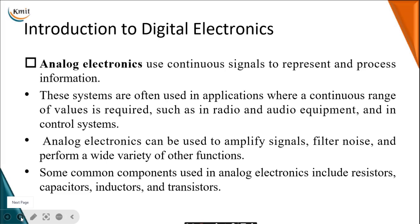Analog electronics uses continuous signals to represent and process information. Whatever input you give to analog devices is in the nature of a continuous signal. After processing by those devices, you get an output which is also in the form of a continuous signal, where the output variation depends on the time signal. These systems are often used in applications where a continuous range of values is required, such as in a radio, audio equipment, or control systems.